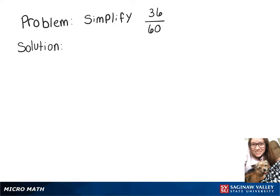In this video, we're going to simplify 36 over 60. So to do that, we want to think of, ideally, the greatest common factor between those two numbers.